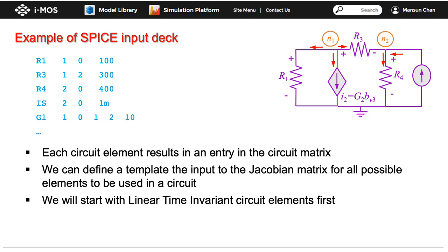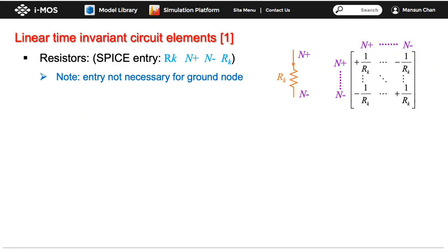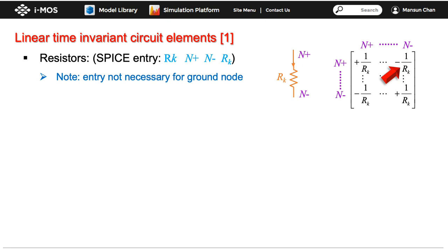We start with linear time-invariant circuit elements: linear resistors and linear sources. For a resistor, the SPICE entry includes the symbol, the positive terminal node, the negative terminal node, and the value. When a resistor is added, it contributes 1/R to the diagonal entries for the positive and negative nodes, and minus 1/R to the off-diagonal entries (positive-node row/negative-node column and vice versa). If a node is grounded, no row or column corresponds to it and no entry is required.